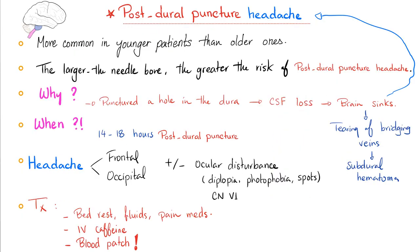You need to know everything about post-dural puncture headache. Why does it happen? Because you punctured the dura, leading to CSF loss, which makes the brain sink and descend. This sinking can cause headache, and if severe, it can tear bridging veins causing a subdural hematoma. It occurs 14 to 18 hours after the procedure: frontal or occipital headache, plus maybe ocular disturbances. Treatment: bed rest, fluids, pain medications, intravenous caffeine injection, and if severe, a blood patch — taking the patient's own blood and injecting it into the epidural space.